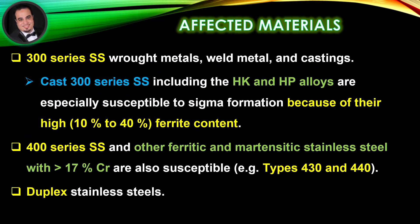Affected materials. 300 series stainless steels — wrought metals, weld metal, and castings. Cast 300 series stainless steels, including the HK and HP alloys, are especially susceptible to sigma formation because of their high 10% to 40% ferrite content. 400 series stainless steels and other ferritic and martensitic stainless steels with 17% chromium are also susceptible — for example, types 430 and 440. Duplex stainless steels are also affected.